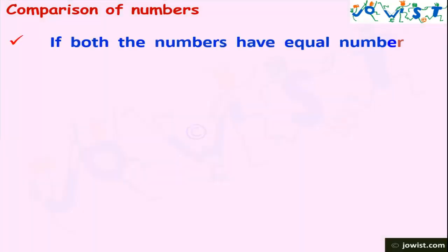If both numbers have an equal number of digits, then how should we compare? We take the numbers 485 and 398. Both numbers have three digits.